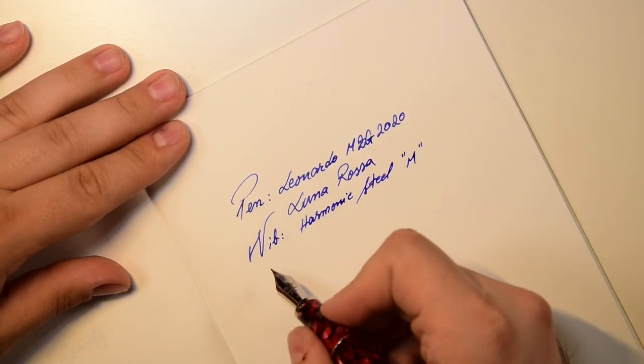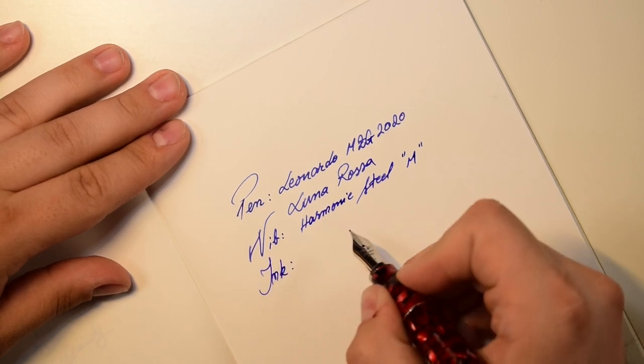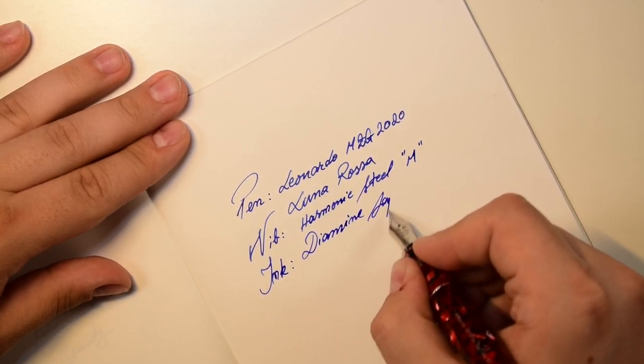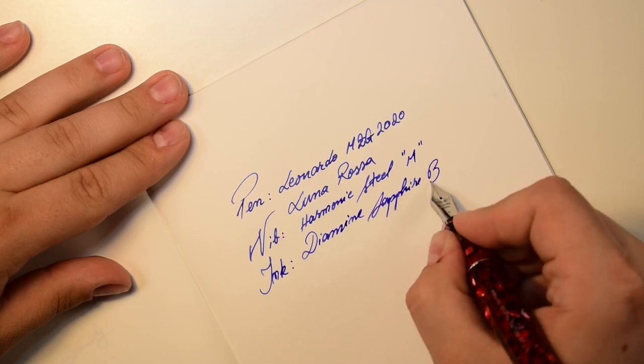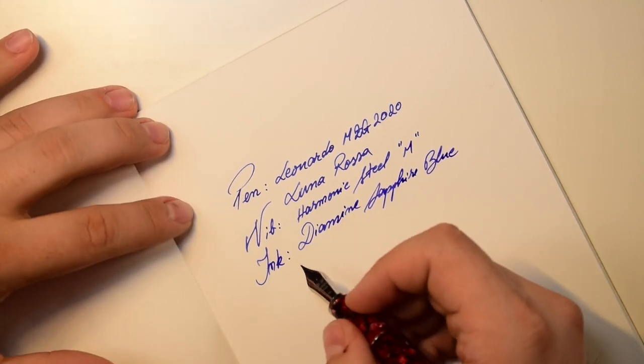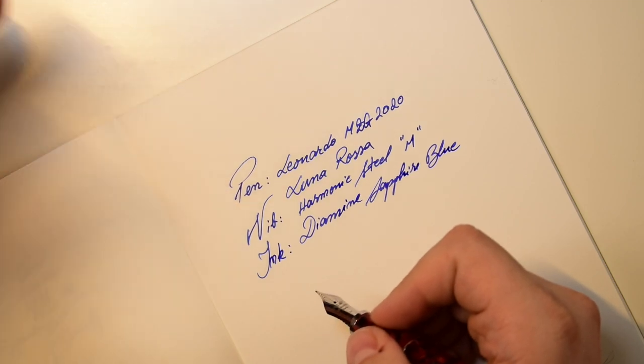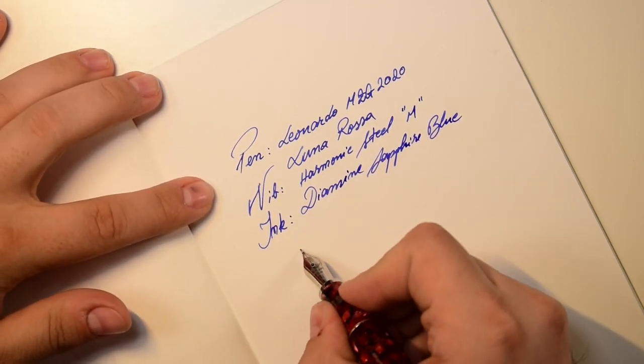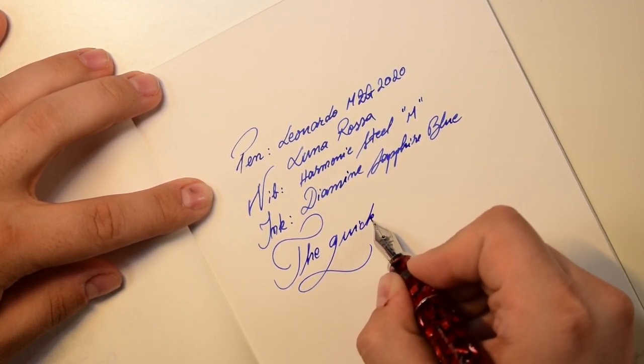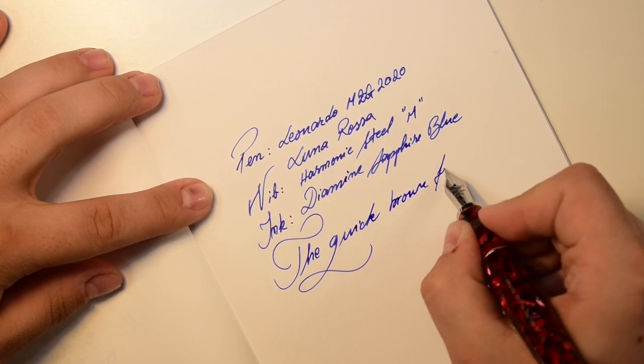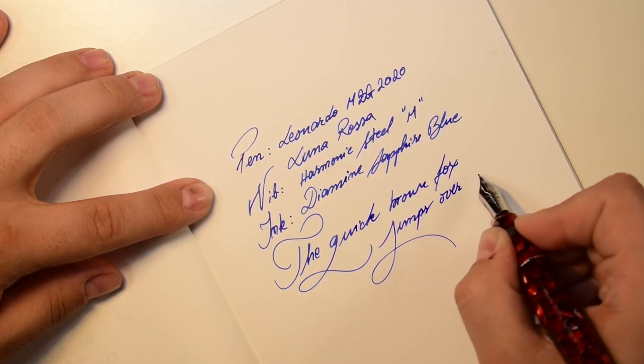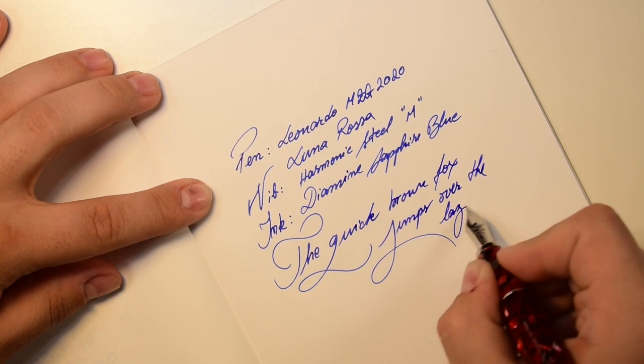It's very smooth. It's very nice. Ink: Diamine Sapphire Blue. It doesn't skip, it doesn't dry out, it has a very good flow. Now let's try the famous sentence. The quick brown fox jumps over the lazy dog.